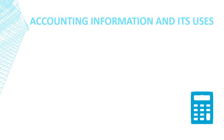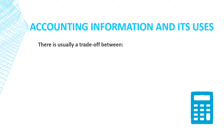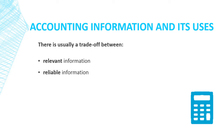Accounting information and its uses. These different types of decisions require different types of information. There is usually a trade-off between relevant information and reliable information. Relevant information can influence decisions about the future or confirm the outcome of a past transaction. Reliable information is that which is free from errors and bias and which faithfully represents economic reality.